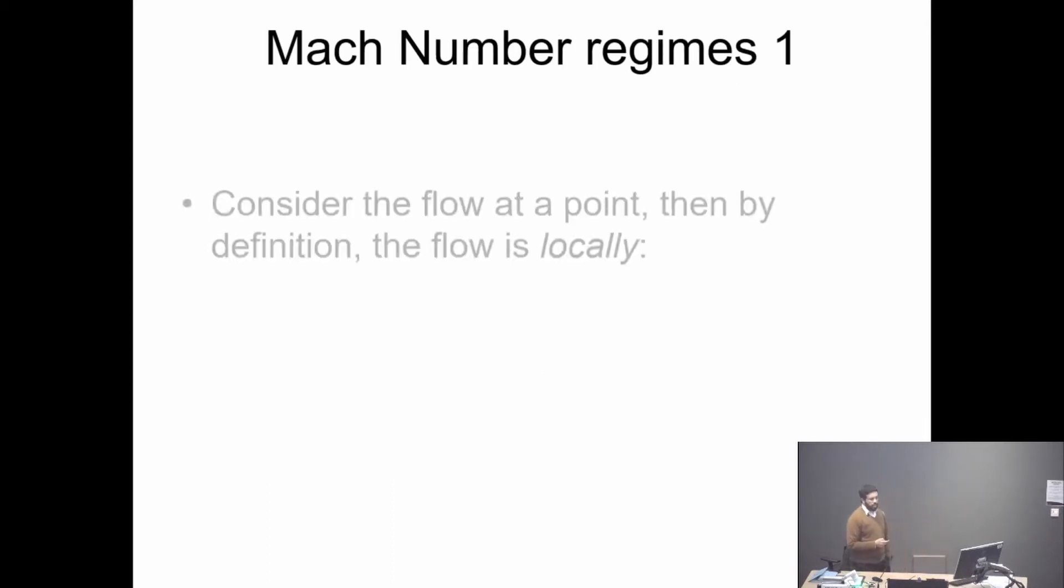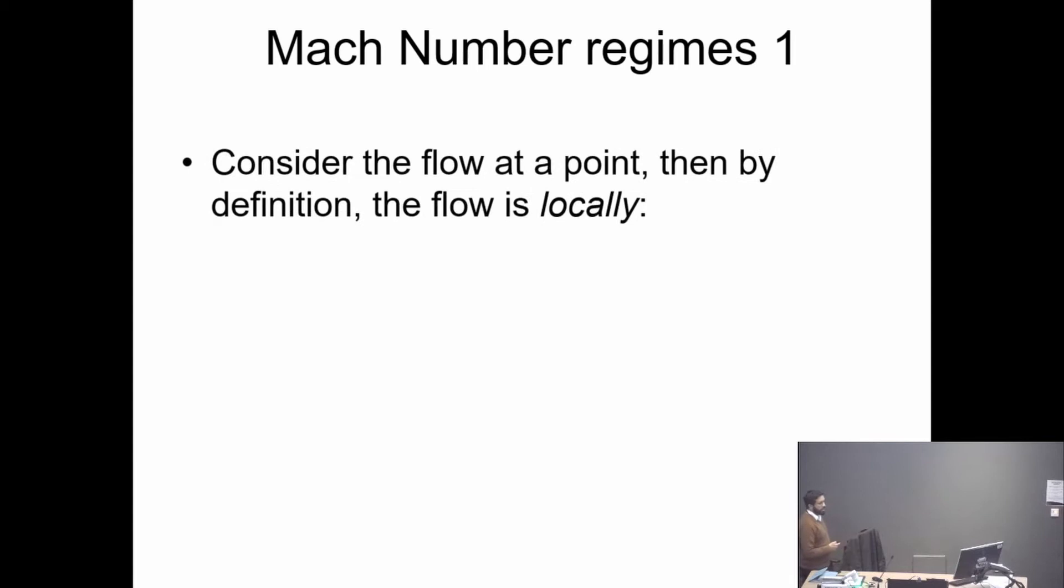So let's remind you about Mach number regimes. Consider the flow at a point. By definition, the flow is called subsonic if the Mach number is less than 1, sonic equals 1, supersonic greater than 1, and hypersonic. There's no strict definition of hypersonic - it's more to do with the flow physics. But usually something like 5 and beyond is probably hypersonic.